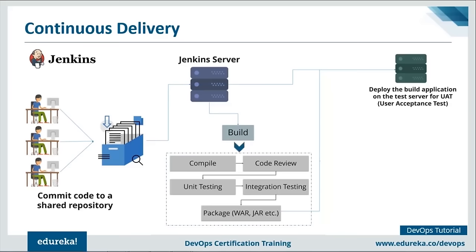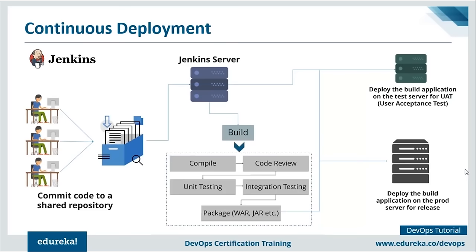Continuous deployment means taking the tested application and deploying it onto production servers for release in an automated fashion. This is not a good practice because there might be certain checks needed before releasing software - marketing, additional testing and more. So it's not advisable to automatically deploy your application onto production. This covers continuous integration, delivery and deployment.